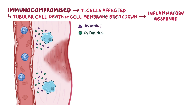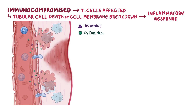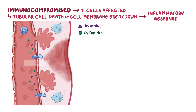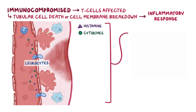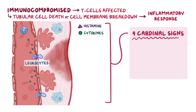This makes blood vessels in the infected area dilate and become more permeable, allowing more leukocytes and fluid to enter local tissue. The end results are the four cardinal signs of inflammation – heat, pain, redness, and swelling.